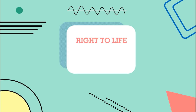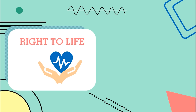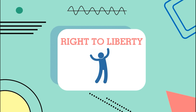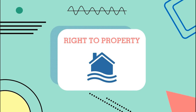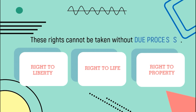First, the right to life. This means that nobody, including the government, can try to end your life. This also talks about the quality of life. Second, the right to liberty or the right to be free. Third, the right to property. This means that you have the right to own anything without any threat being faced. These three rights cannot be taken away from you without due process.